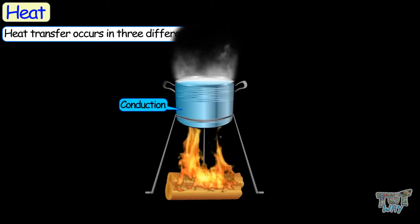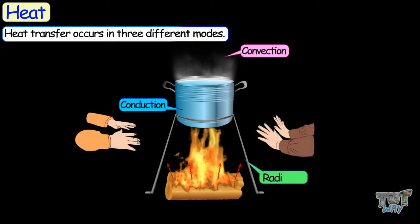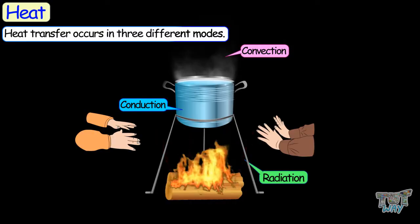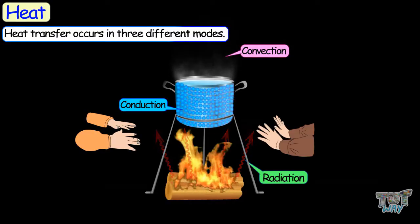Heat transfer occurs in three modes, which are known as the three modes of heat transfer: conduction, convection, and radiation. Now let's learn all three of them one by one.